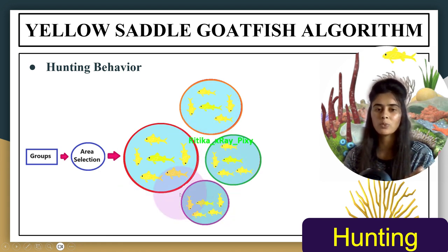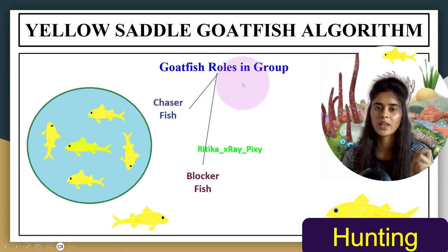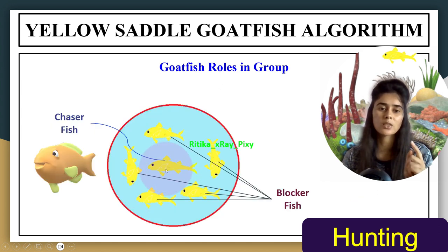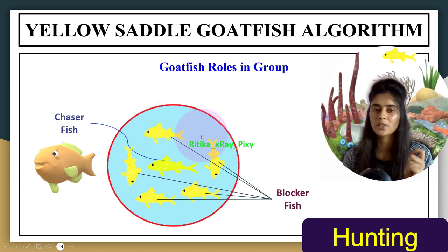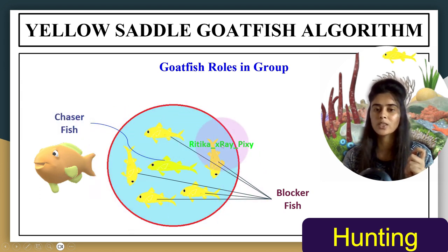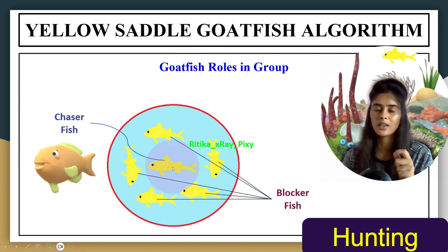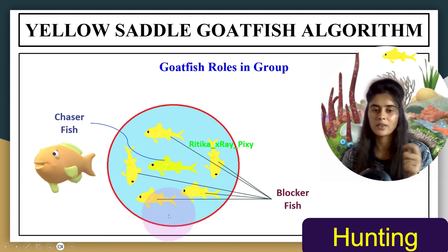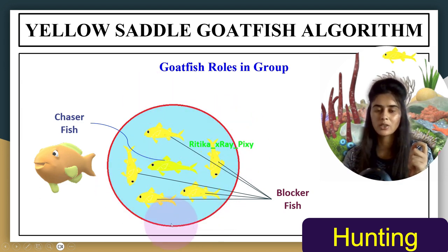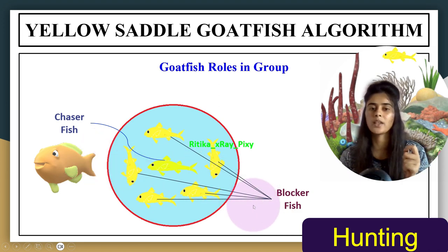In each subgroup, goatfish play two different roles: chaser fish and blocker fish. There is only one chaser fish in each group who leads the hunt, and the other individuals are blocker fishes. When the target tries to escape into rock cracks or coral, the blocker fishes block their routes. This chaser and blocker behavior is also simulated in this algorithm.